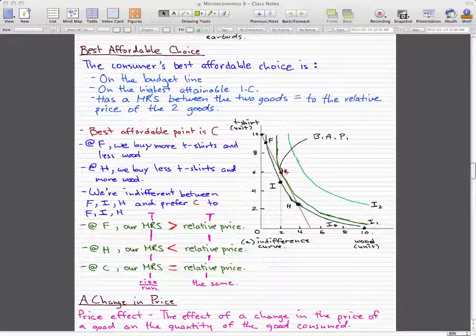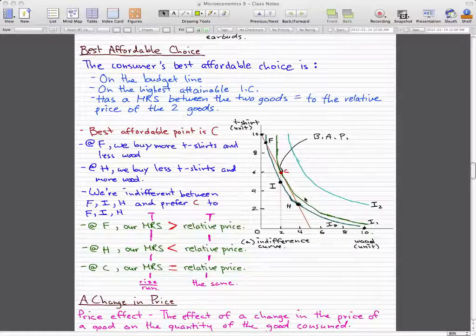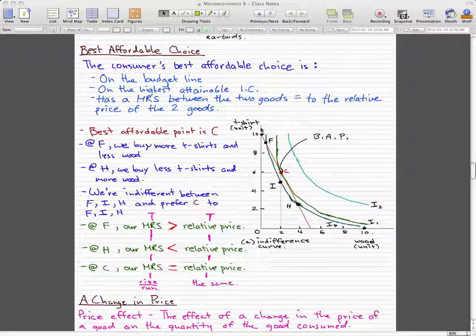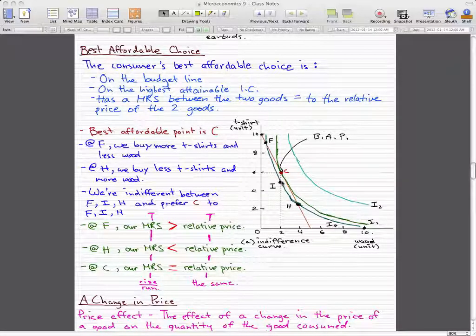But we would prefer C to points F, I, and H because C is on a higher indifference curve. So on the same budget line, we would prefer point C to points F and H, because points F and H are on a lower indifference curve than point C.